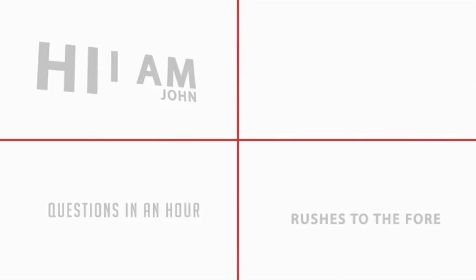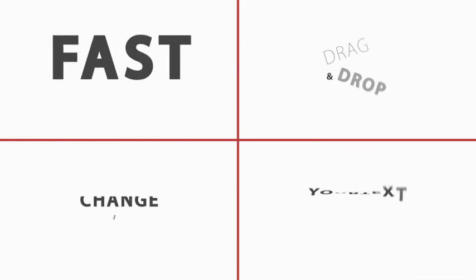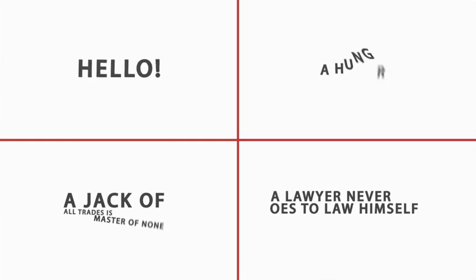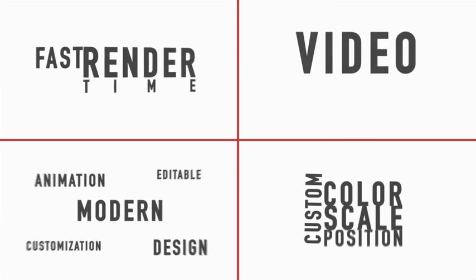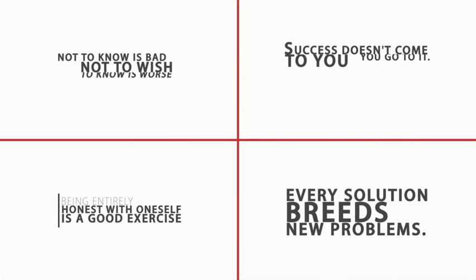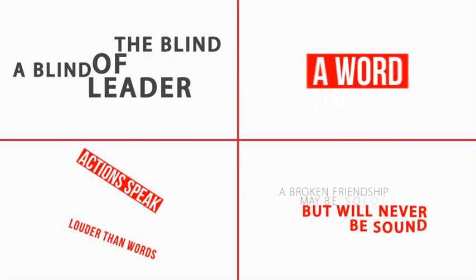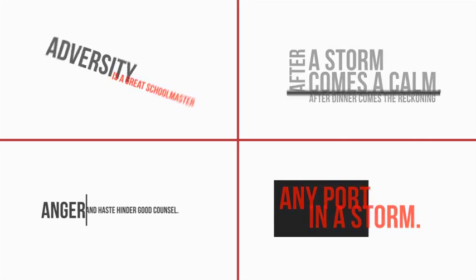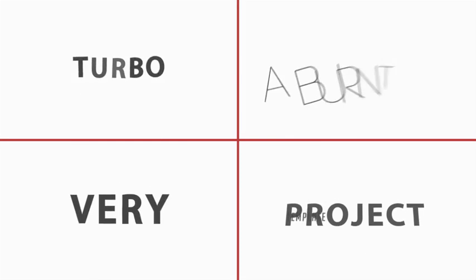Today we're offering you Typography Constructor — a quality project to create animated typography. In it, you can change the color, font, and size of text animation and its rate of reproduction. It's simple to edit, and it has a help file to explain what's happening on your monitor. To work with the constructor, you'll need Adobe After Effects. It will be a pleasure to work with Typography Constructor.